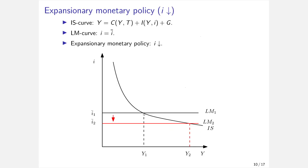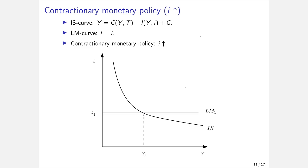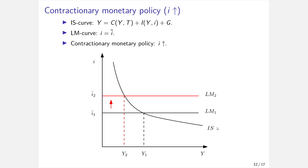What happens with contractionary monetary policy? In this case, the central bank wants to fight inflation and increases the interest rate to prevent the economy from overheating. Increasing the interest rate is intended to reduce investment and thereby reduce income and output. This contractionary monetary policy shifts the LM curve upwards, and a new equilibrium forms at the intersection of the old IS curve with the new LM curve — at a lower level of income and a higher interest rate.